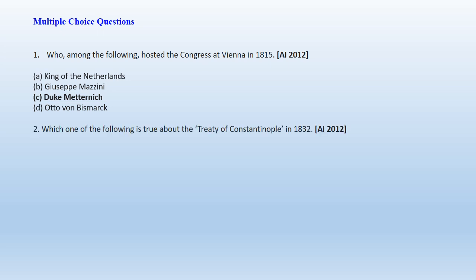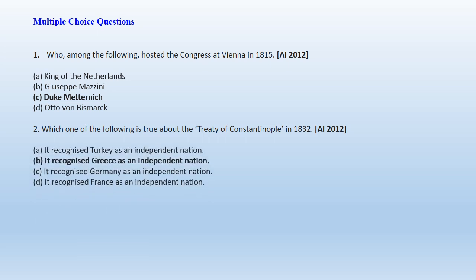Question 2: Which one of the following is true about the Treaty of Constantinople in 1832? A. It recognized Turkey as an independent nation, B. It recognized Greece as an independent nation, C. It recognized Germany as an independent nation, D. It recognized France as an independent nation. Option B is the right answer — Greece was recognized as an independent nation in the Treaty of Constantinople in 1832.